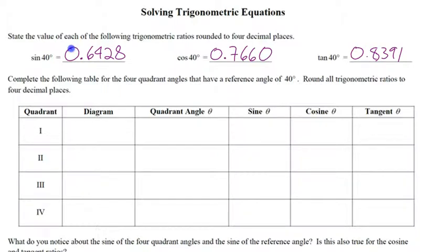So if you don't get an answer, then you've got to think, oh wait, my calculator's in the wrong mode. When would you ever need to have your calculator in radian mode? Next year, when you do radians. Radians are an alternate way of measuring angles, which actually make a lot more sense than degrees.